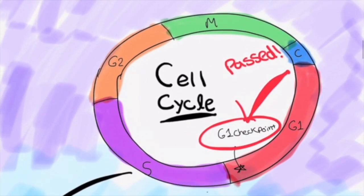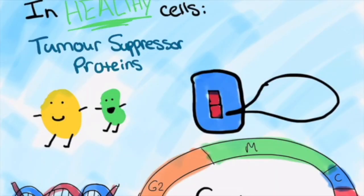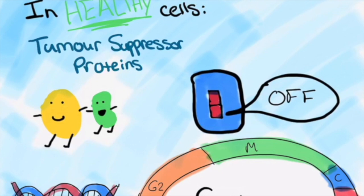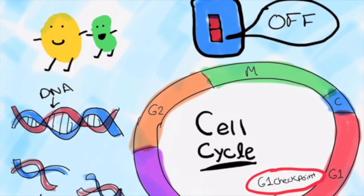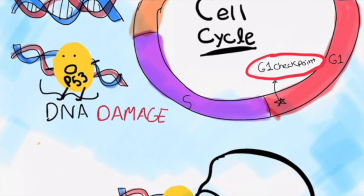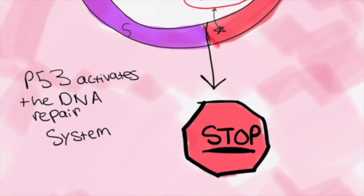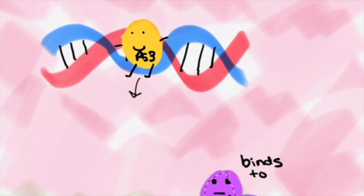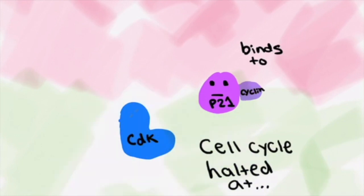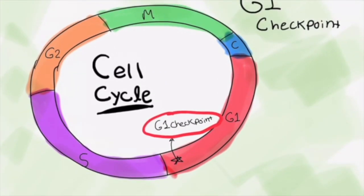Once the G1 checkpoint is passed and levels of the cyclin-CDK complex exceed the threshold, the G1 phase ends and DNA replication — the S phase — begins. In healthy cells, tumor suppressor proteins turn off cell division by preventing cyclins from binding to CDKs. The tumor suppressor protein P53, for example, senses the integrity of the DNA at the G1 checkpoint and activates the DNA repair system if the DNA is damaged. P53 stops the cell cycle at the G1 checkpoint to allow time for DNA repair by inducing the transcription of P21, which then binds to cyclins to prevent them from interacting with CDK, thus blocking the cell cycle at the G1 checkpoint and preventing the cell from proceeding to DNA replication in the S phase.